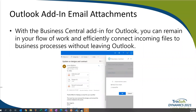Next up is an Outlook enhancement. The email inbox often serves as a source of incoming files that initiate or unblock workflows, such as PDF invoices for payment, photos of damaged goods, customer requirements in a Word document, or part specifications in Excel. With the Business Central add-in for Outlook, you can remain in your flow of work and efficiently connect incoming files to business processes without ever leaving Outlook. Once you identify the order the email relates to, the attachment feature can be used to copy files from the current email directly to that order.